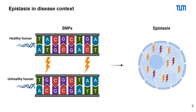The differences are single nucleotide polymorphisms, or short, SNPs. On average, they occur every 1000 nucleotides in the human genome. Epistasis is a set of SNPs which could explain a part of the heritability.